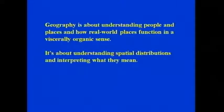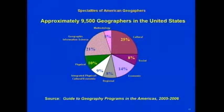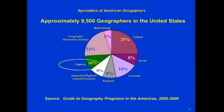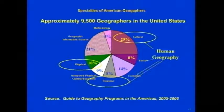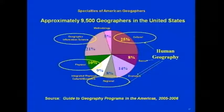If we look at the specialties of American geographers, a lot of people outside geography think of it as a physical discipline, but only 10% of geographers claim a physical specialty. Far more — about well over half — claim some form of human geography as a specialty. And more than one-fifth claim geographic information science as a specialty.